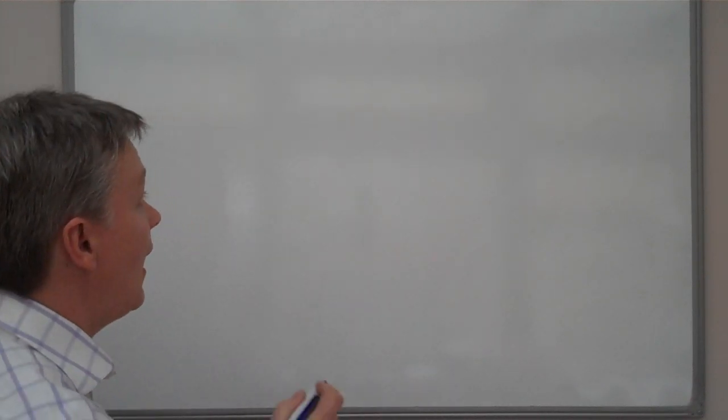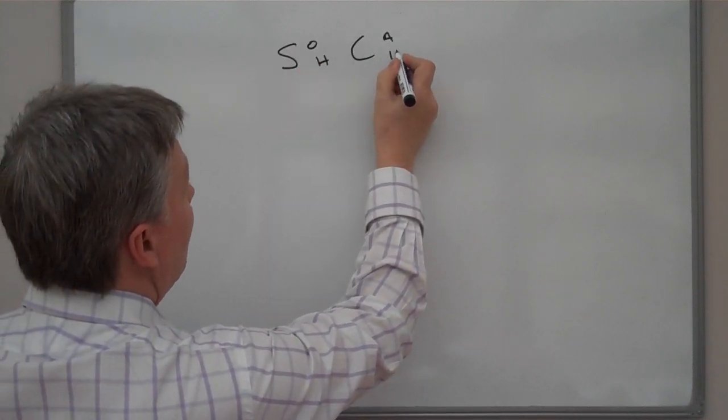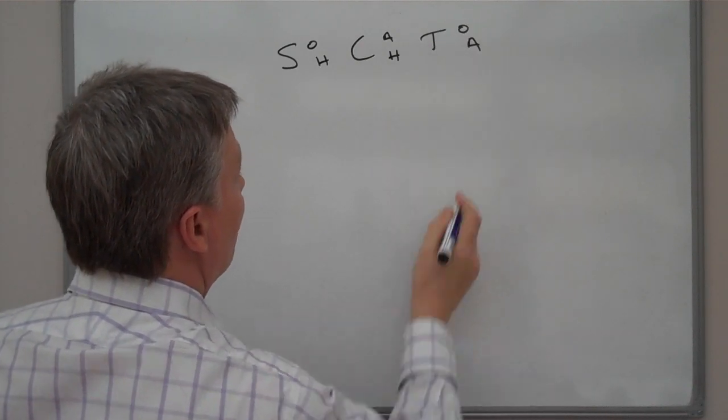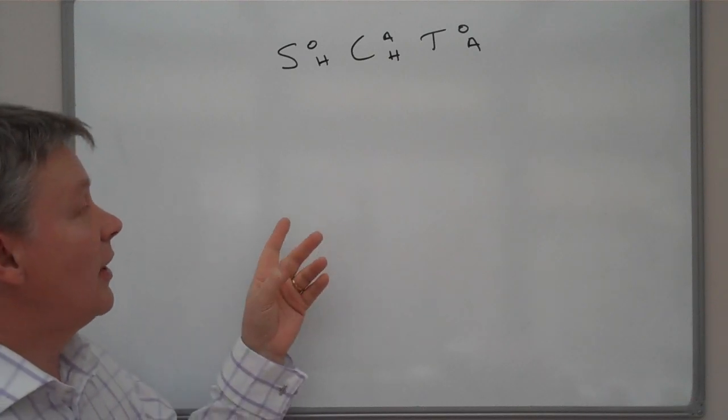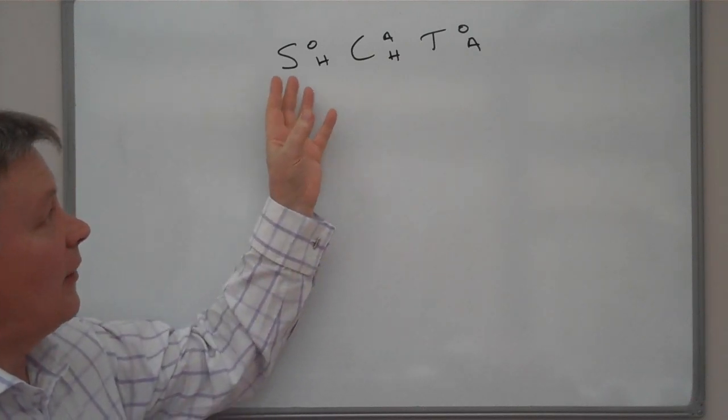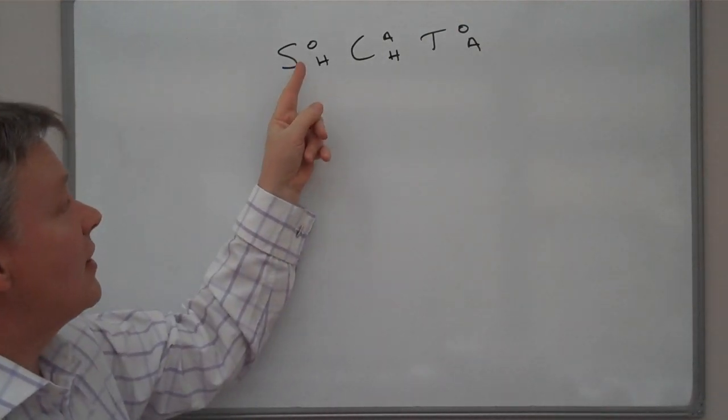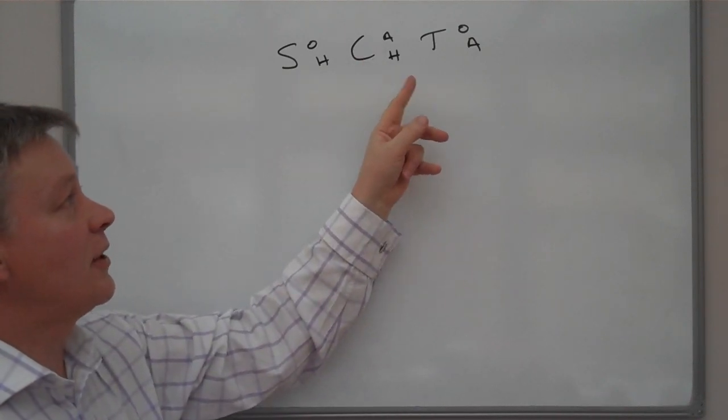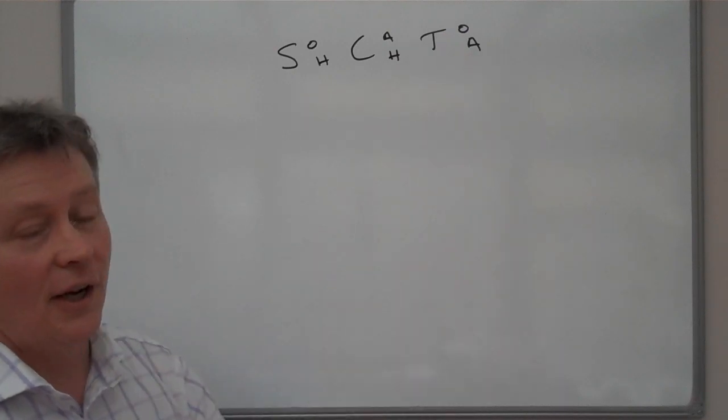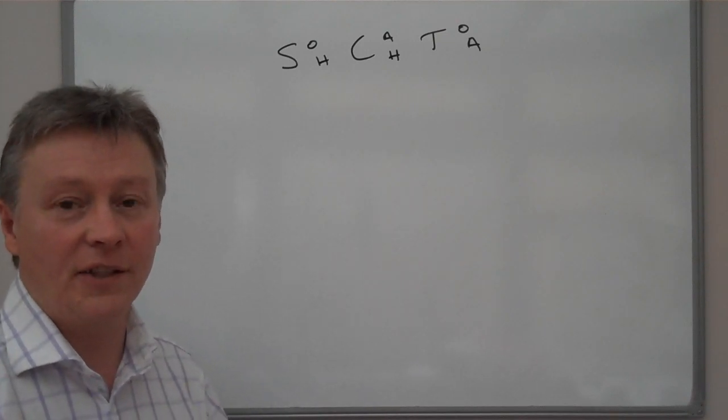Some people call it SOHCAHTOA, so I'm just going to write that up on the board. The reason I've done it like that is because it reminds me that when we're talking about this particular relationship we're talking about sine equals opposite over hypotenuse, cosine equals adjacent over hypotenuse, or tangent equals opposite over adjacent.